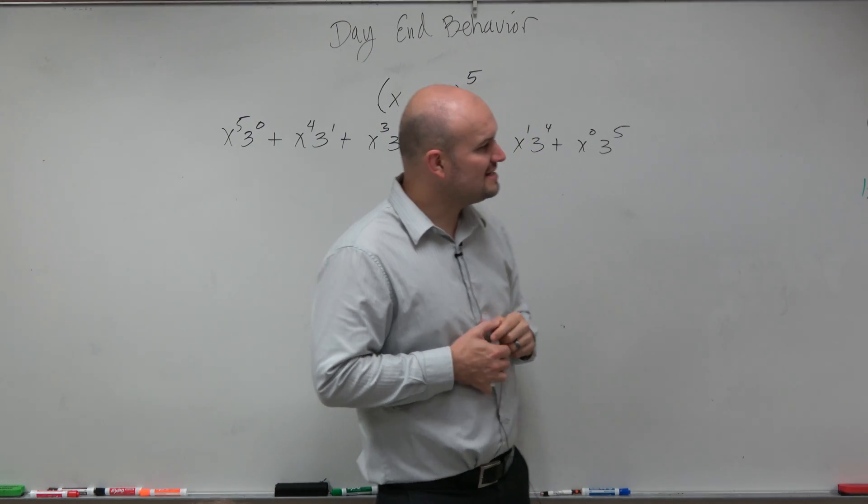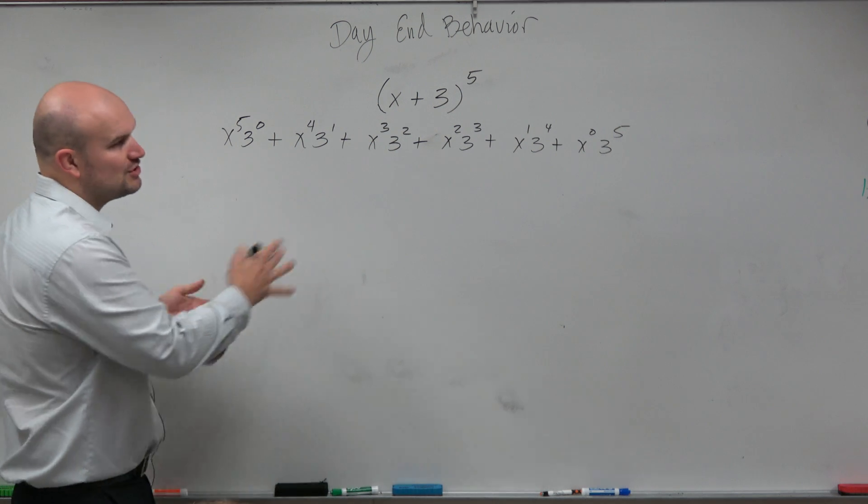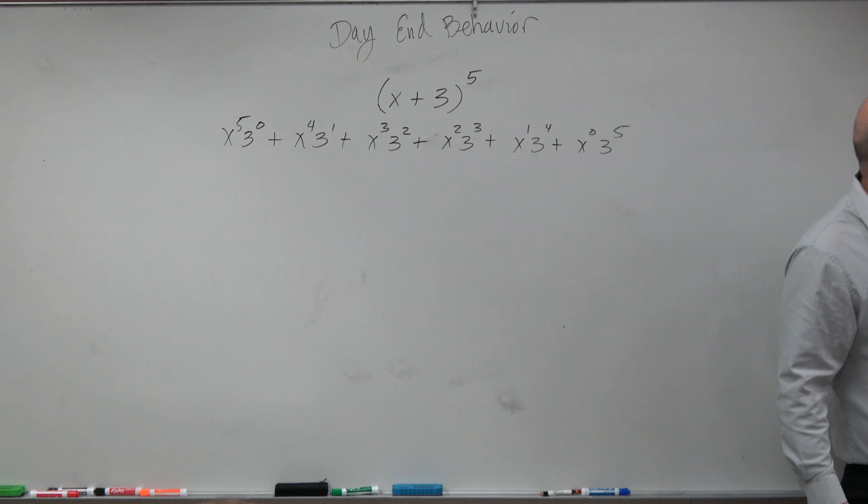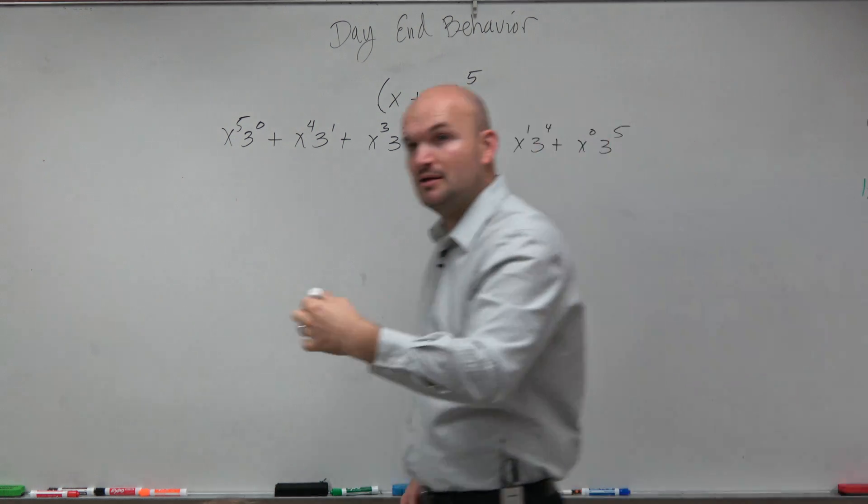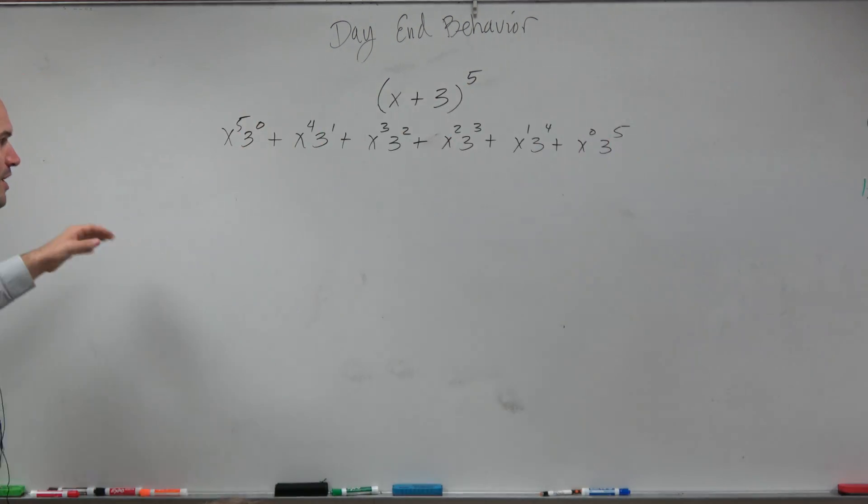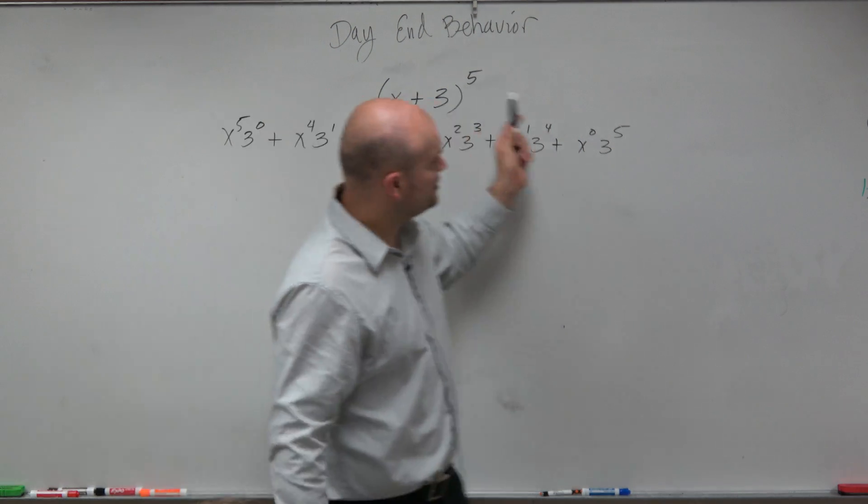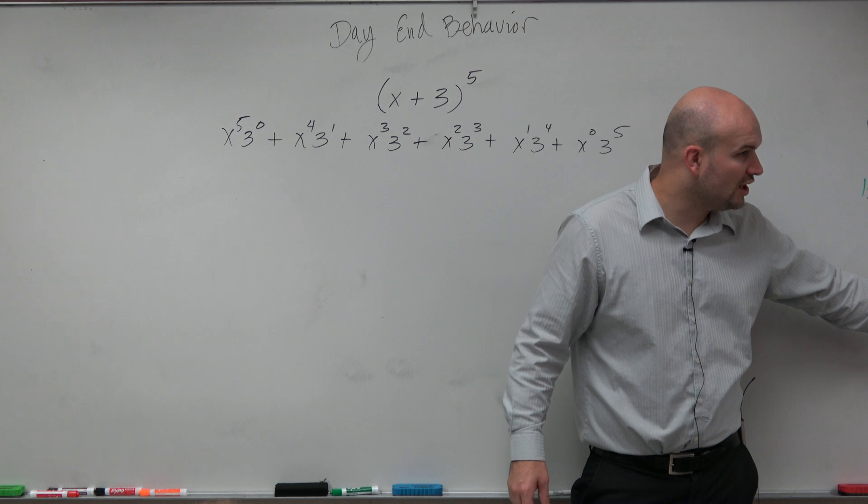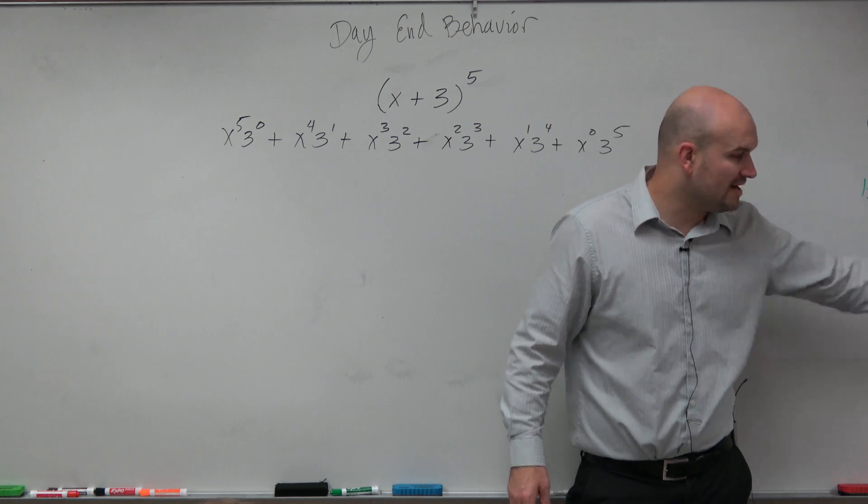Now, the next thing is, the Pascal's triangle. Again, what does this Pascal's triangle represent? It represents the coefficients, or what each term is being multiplied by. So therefore, I go to the row of, to the fifth power, which would be quintic, and I can see that every single term is going to be multiplied by those coefficients.